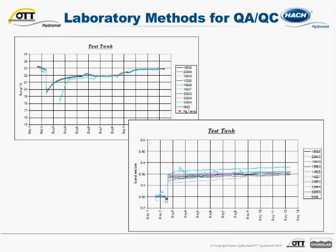In the lower right hand section of the slide, we have connectivity data from the same 10 instruments that were in a laboratory tank over an 11 day period. We see some variation from the group, not as tight as we would like. This may be an indication of sensor problems or poor maintenance.